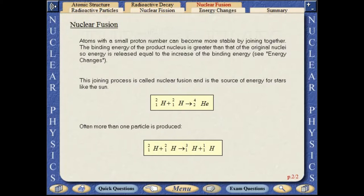Atoms with a small number of protons can become more stable by joining together. The binding energy of the product nucleus is greater than that of the original nuclei, so energy is released equal to the increase of the binding energy. This joining process is called nuclear fusion and is the source of energy for stars like the Sun.